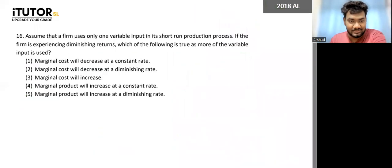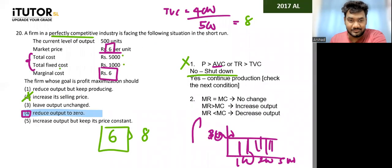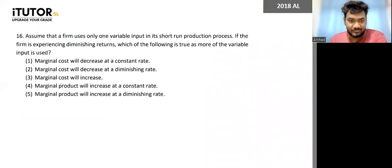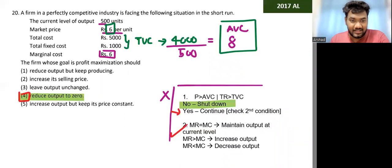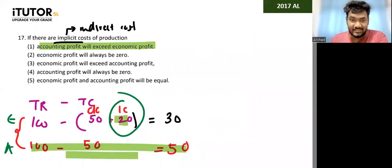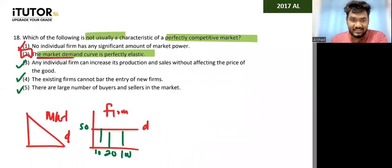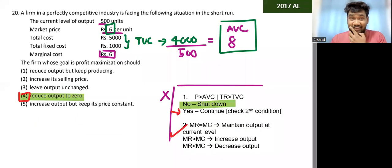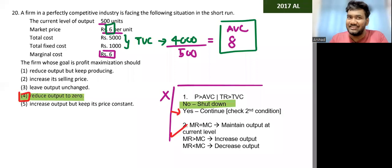So how do we find MR? Remember, MR equals AR equals price in a perfectly competitive market. That was 2017 questions 16 to 20. If you got five out of five, congrats — you are at a better level than I was during A-levels. Even if you got four, you're at my level, so feel good.